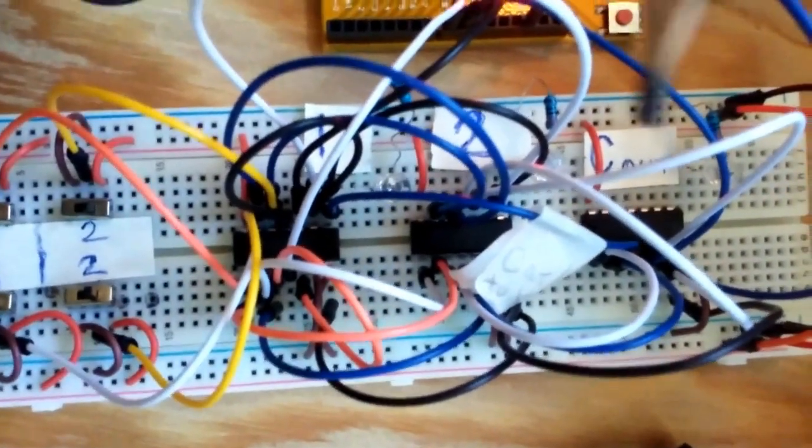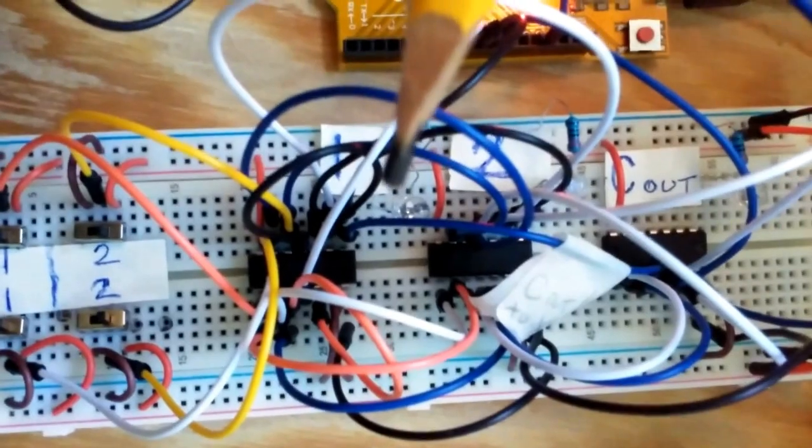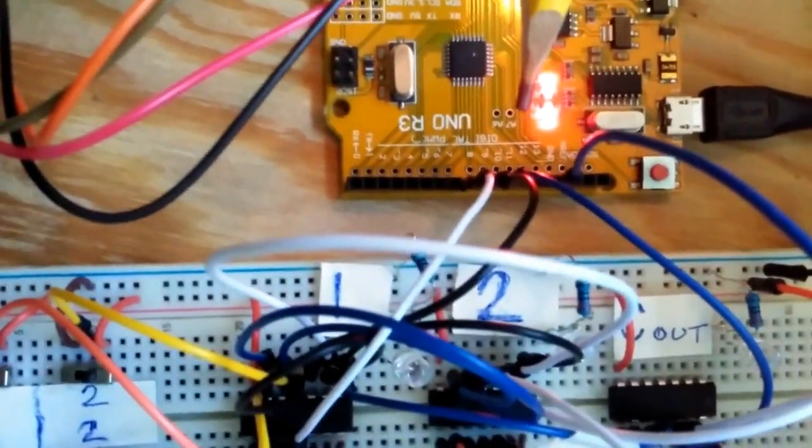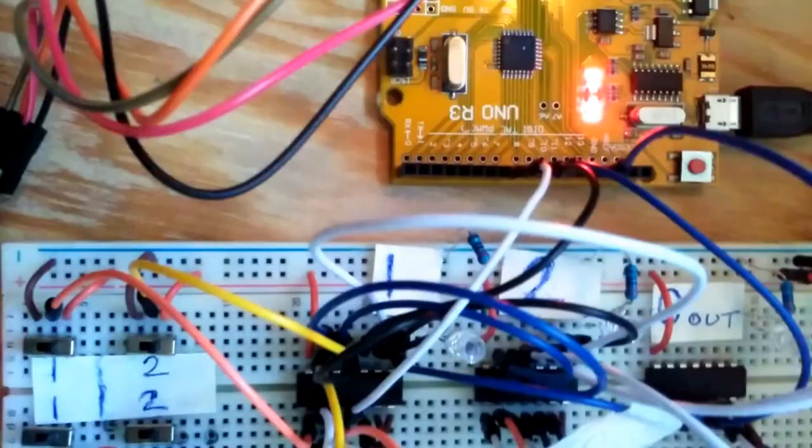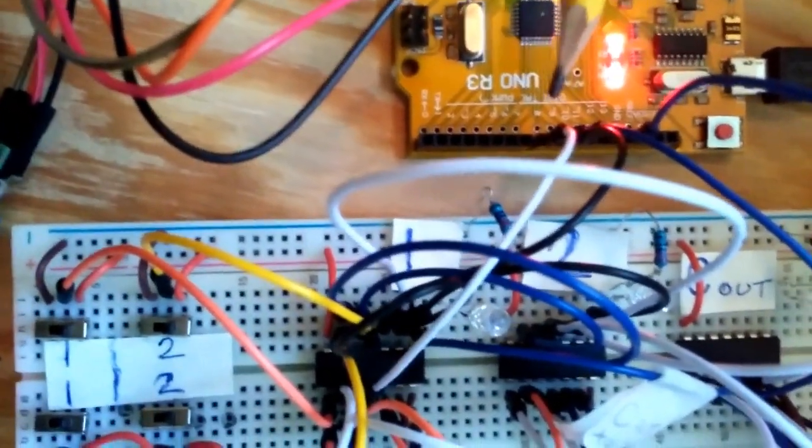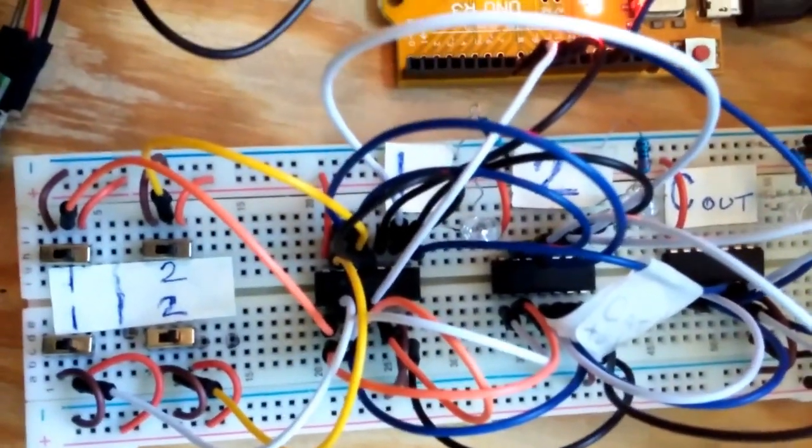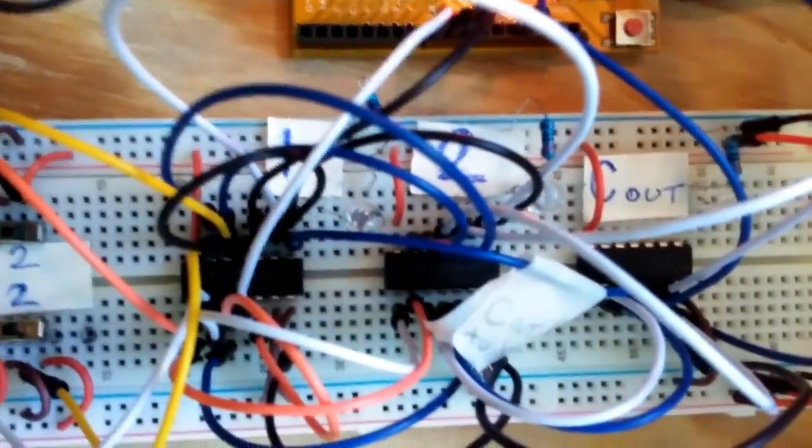An important thing is to connect all your IC ground connections to Arduino ground. That's very important for stability. And I've got digital pins 8, 9, and 10 assigned to sum 1, sum 2, and my carry out.